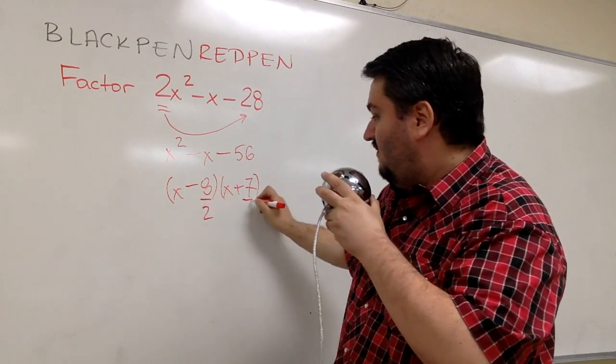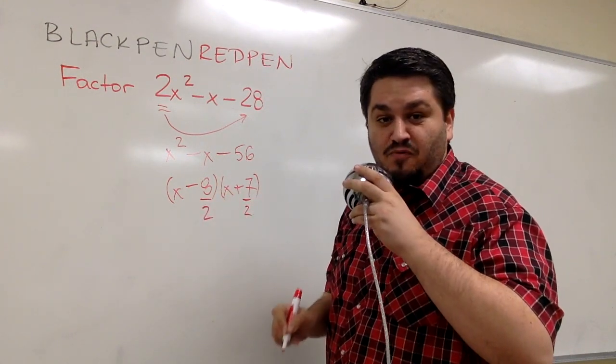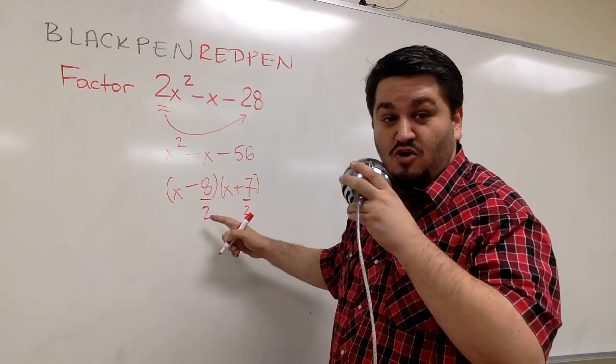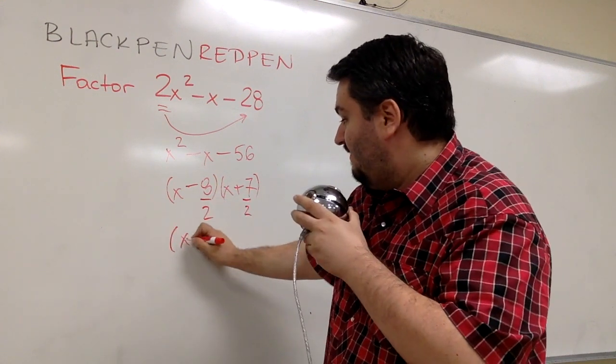So you divide this 8 by 2, and you divide this 7 by 2. If you could simplify this fraction, you go ahead and do that. So that will give you x minus 4.